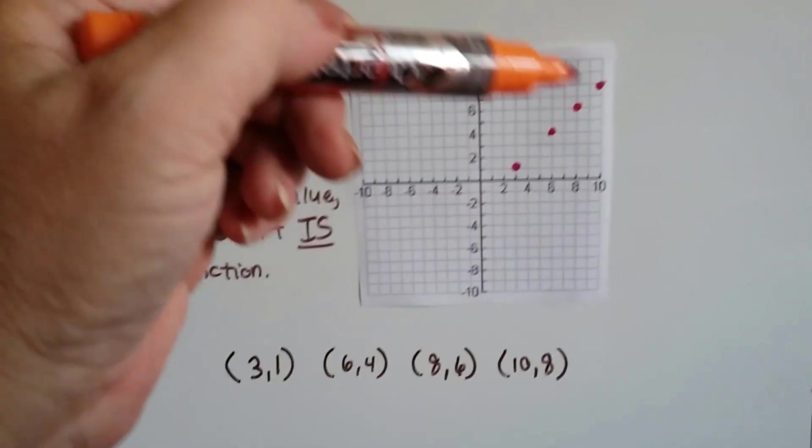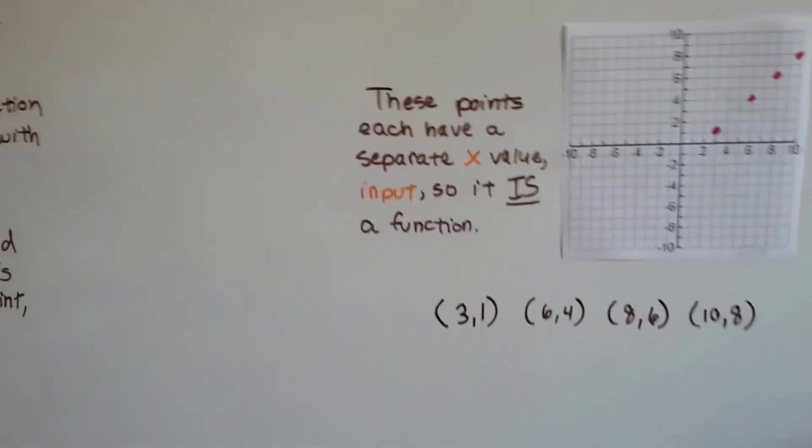There are no dots on top of the other dots. See? This is the easiest way to tell if there's a function or not. It's through a graph.